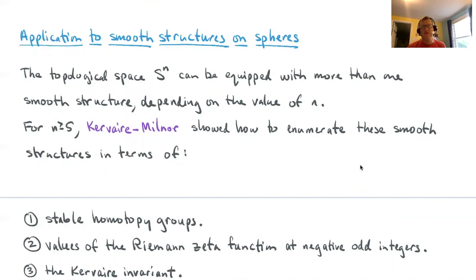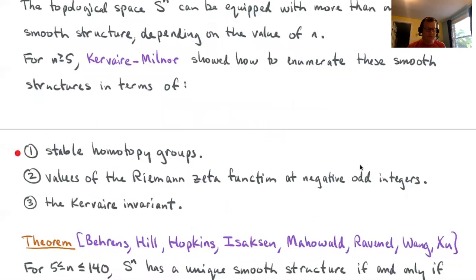For very low values of n—two, three, and four in particular—the situation is wildly complicated and far beyond what we're going to talk about here. But for large enough n, in particular for n ≥ 5, Kervaire and Milnor showed how to enumerate these smooth structures. Their enumeration has several fairly sophisticated ingredients. The first ingredient are the stable homotopy groups that we've been talking about. You also have to use some values of the Riemann zeta function at negative odd integers. And the third thing you have to know about is the Kervaire invariant. This is one of the many reasons that the Kervaire invariant has drawn so much attention in recent years and so much study.